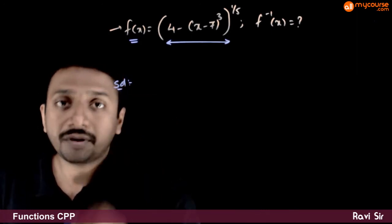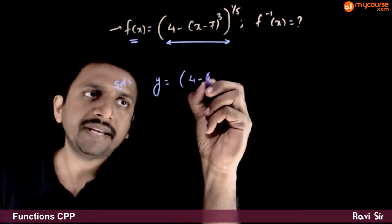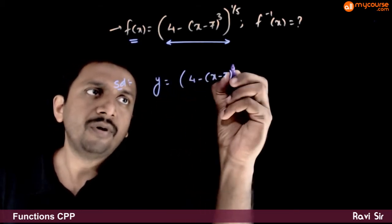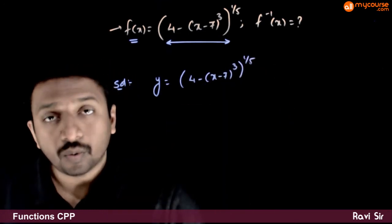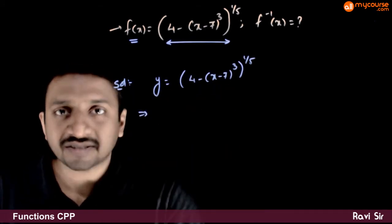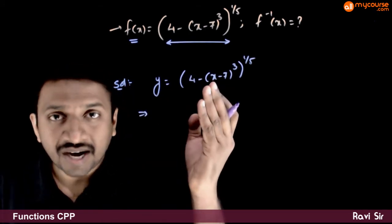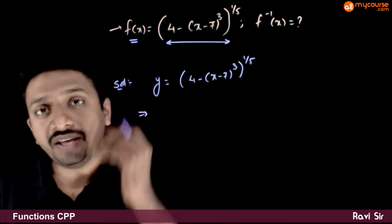In a very straightforward function, we start with y is equal to some function of x: 4 minus x minus 7 whole cube whole power 1 by 5. So we have to go and find what x is. Let us try to send all the terms on this side except x onto the other side.